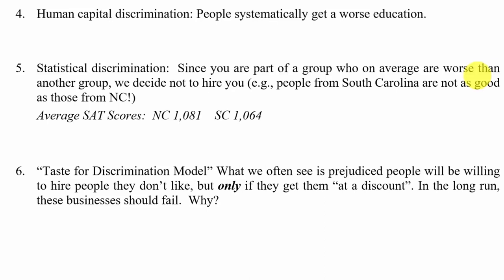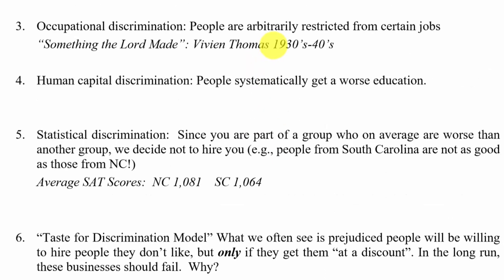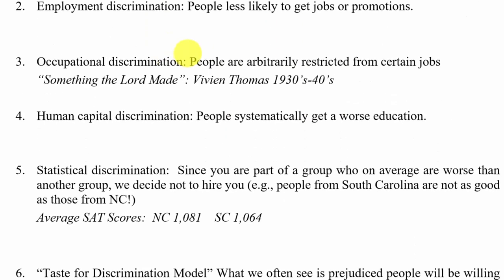A silly example: since I'm from North Carolina, I might say people from South Carolina just aren't as good as people from North Carolina, so I won't hire them. And technically, the average SAT score in North Carolina is 1081 points while South Carolina's is only 1064 points — I might use that as justification in my own mind. But no matter what type of discrimination we're talking about — employment, wage, occupational, or statistical — this kind of reasoning is fundamentally flawed.